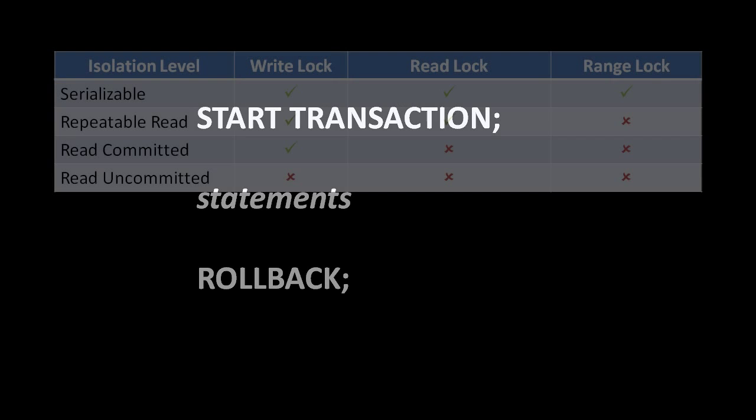Earlier when we discussed transactions, we talked about ACID: atomicity, consistency, isolation, and durability. When we talked about isolation, we mentioned that in practice we don't always want perfect isolation because it tends to degrade performance with a high-demand database being taxed by clients making requests of it. In the SQL standard, there are actually four different levels of isolation specified — with the most isolated at the top being serializable, and at the bottom being read uncommitted, which is basically no isolation. What characterizes the difference between these levels is the locks, if any, which they acquire on rows of a table in the course of a transaction.